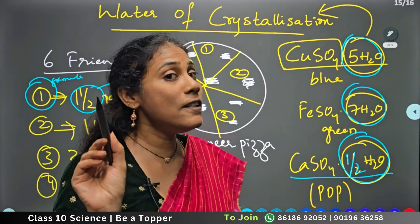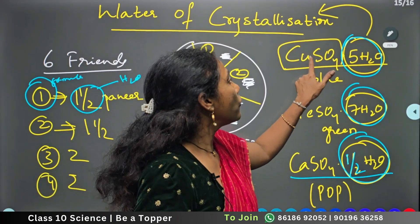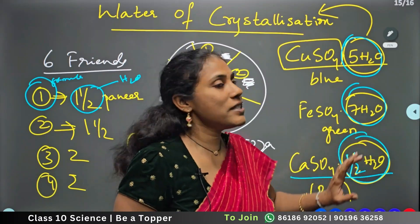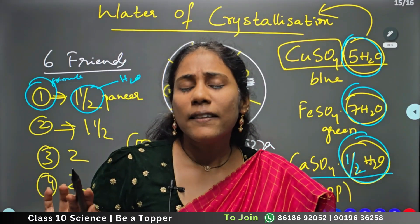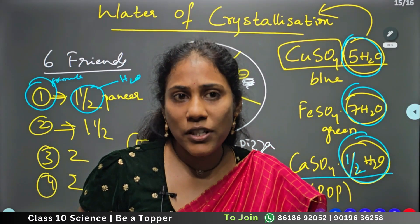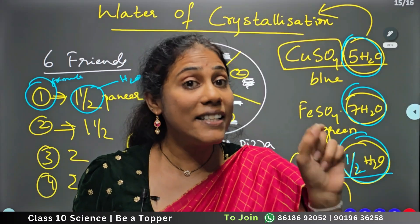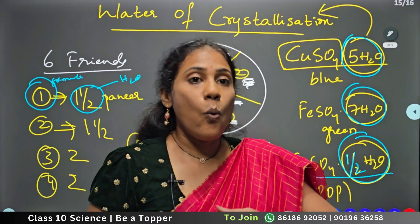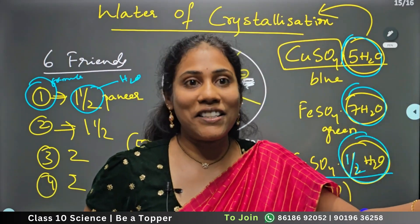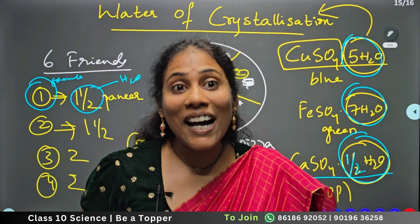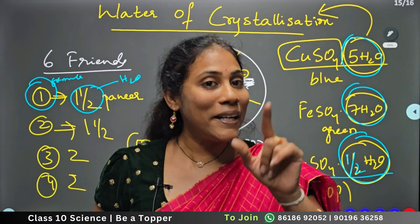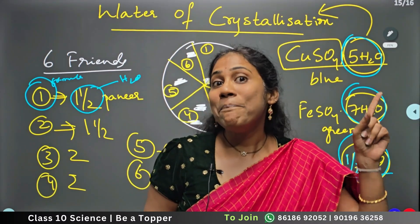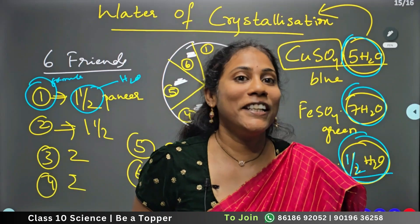Sometimes this water of crystallization is the reason for color. The blue color of copper sulfate is due to the 5H2O, and the green color of ferrous sulfate is due to 7H2O. As long as the water of crystallization is present, the color exists. Once it goes away, the color vanishes — and you can observe that in a beautiful experiment coming up next.